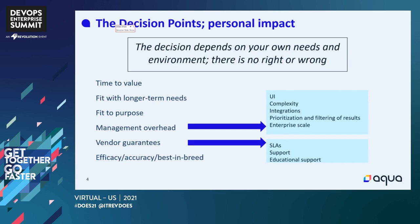Other things to keep in mind: vendor guarantees. Here comes in the purpose of the application — do you need SLAs? Do you need support? What kind of support do you need around education of a team? And then how much do you want to get into efficacy, accuracy, best in breed? Sometimes — not always — but sometimes there are differences between open source and commercial in terms of best in breed, accuracy, and so on.